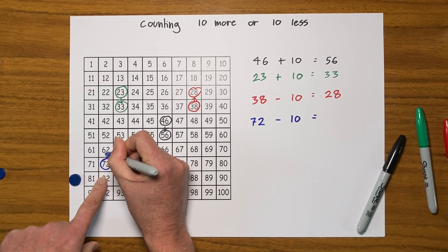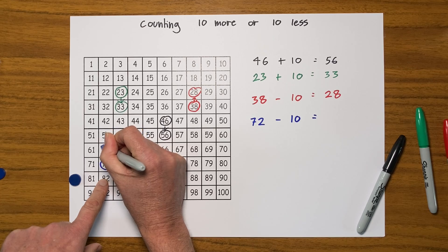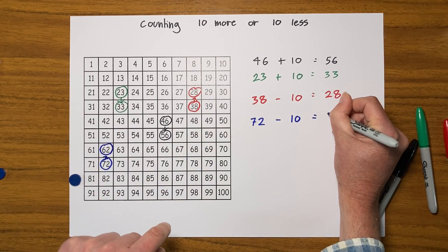So put a circle around 72 and go 72 take away 10. Well you can tell me, I just need to go up one, put a ring around that and I get 62.